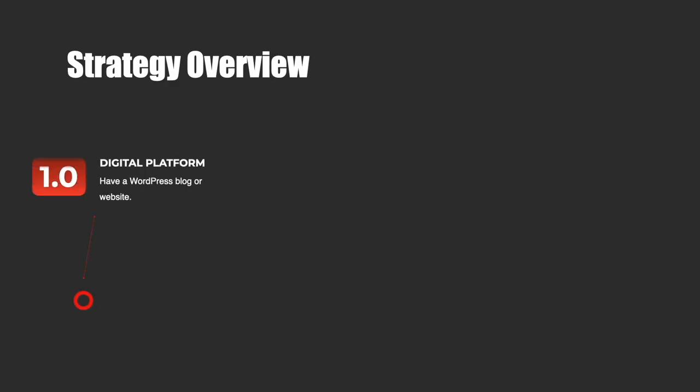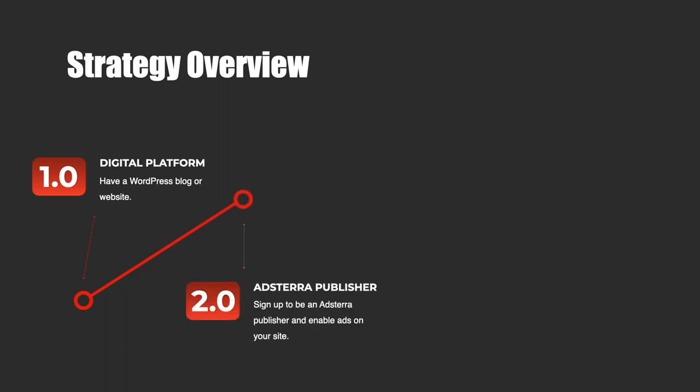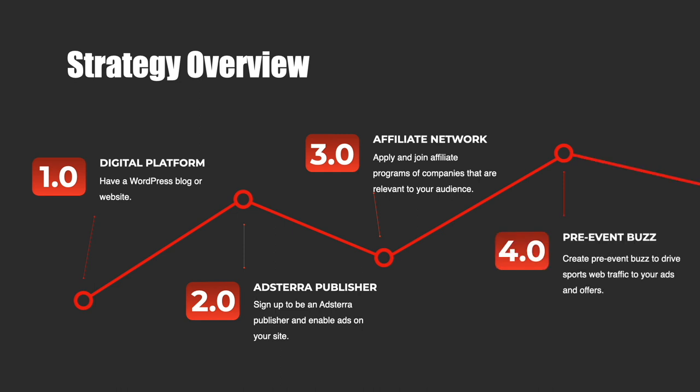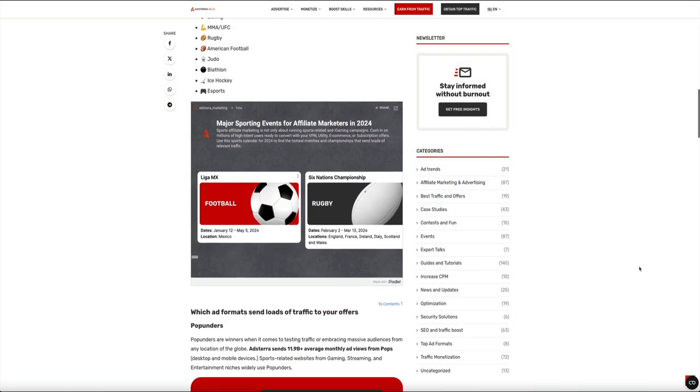Once you've done those three things — have a digital platform, sign up as an Adsterra publisher, and sign up as an affiliate for relevant companies — you can move forward with monetizing sporting event traffic. One key component is to create pre-event buzz. For my esports blog, I'll start with hype weeks before a major esporting event by seeding content that builds anticipation — teasers, predictions, behind-the-scenes looks to draw in the audience. I'll also engage through social media, email newsletters, and interactive posts. This pre-event buzz primes your audience for Adsterra ads, making them more receptive when the event kicks in.